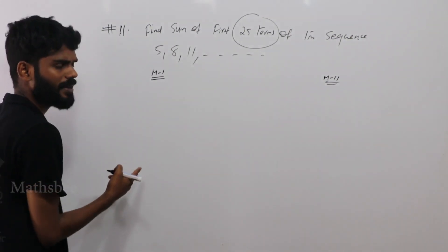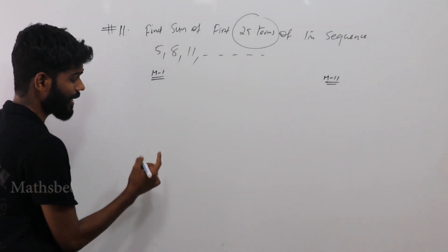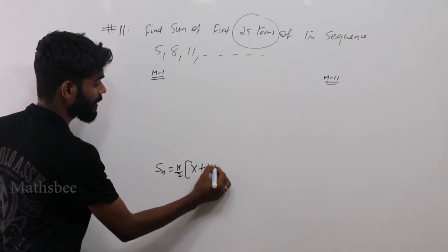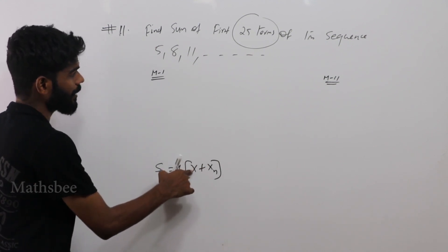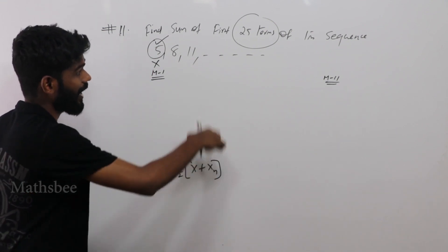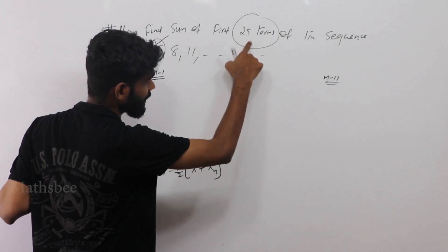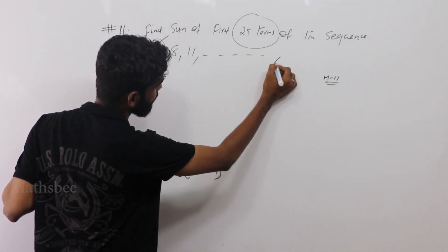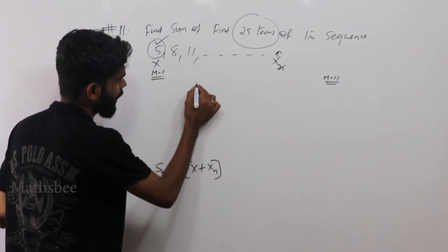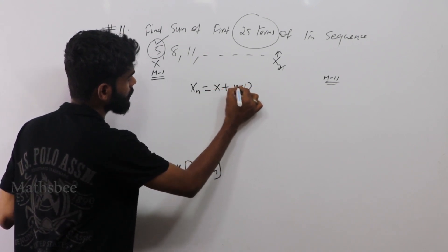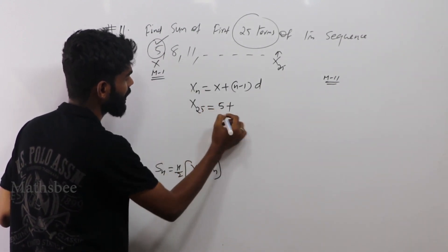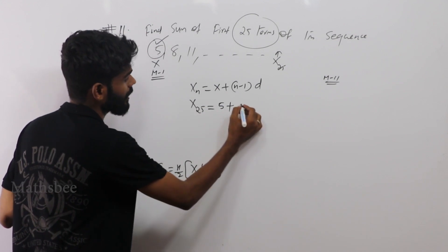Using the first method, I am using xn. The formula is: xn = x + (n − 1)d. So x25 = 5 + (25 − 1) × d. The common difference d = 8 − 5 = 3. So x25 = 5 + 24 × 3.